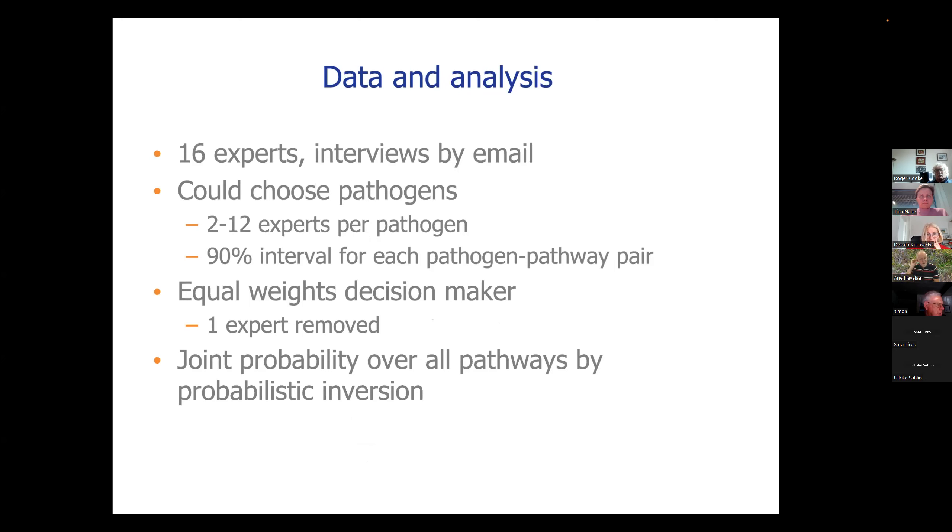So in this study, we had 16 experts, we interviewed them by email. In the end, this study was done quite a bit in a hurry, mainly because the contract between Delft and RIVM took so long to arrange that we didn't have a lot of time to do the actual work. We let the experts choose the pathogens they felt comfortable evaluating, and that resulted in two to 12 experts per pathogen. And we asked them for the 90% interval of their estimates of the transmission by each pathway, pathogen pair. And so we didn't ask it jointly. We asked for single numbers per pathogen, pathway pair.